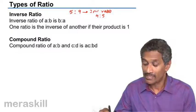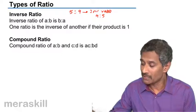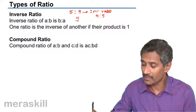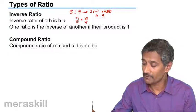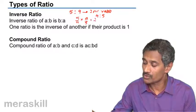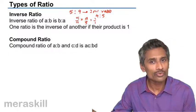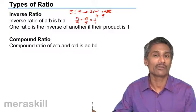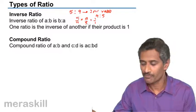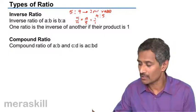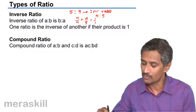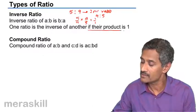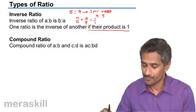In other words, if you multiply the two — if you see 5/9 into 9/5 — you get 1 is to 1. So two ratios are said to be inverses of each other if their product is 1. One ratio is the inverse of another if their product is 1.